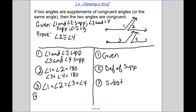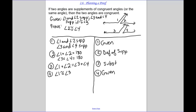Step four: let's write out the part of the given we didn't write out — angle one is congruent to angle three. Since one is equal to three, I can subtract. So angle two is congruent to angle four by subtraction, because I subtracted angle one and angle three from both sides.